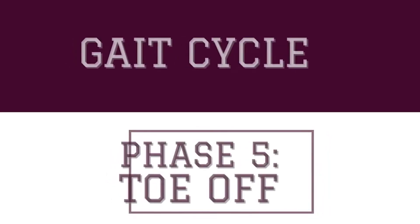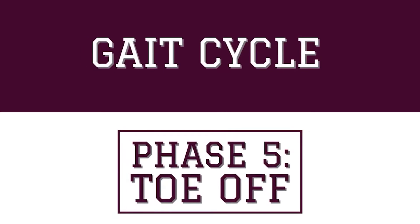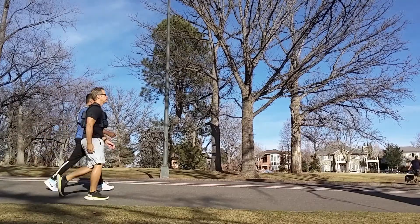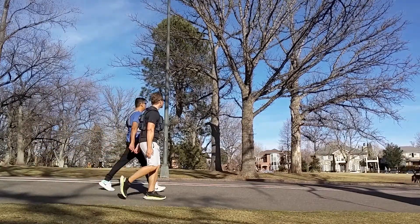The fifth phase of the gait cycle is toe-off. Let's take a closer look and apply our strategy of ankle, knee, and hip.